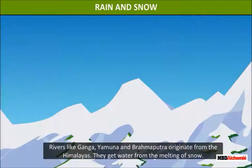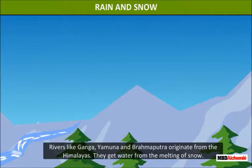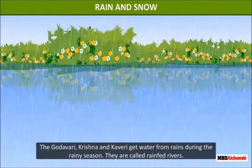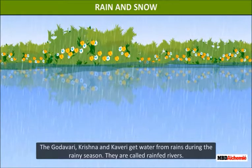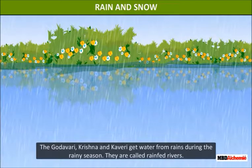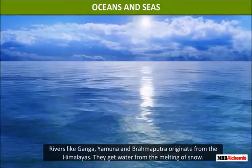Rivers like Ganga, Yamuna, and Brahmaputra originate from the Himalayas. They get water from the melting of snow, therefore they are called snow-fed rivers. The Godavari, Krishna, and Kaveri get water from rains during the rainy season — they are called rain-fed rivers.